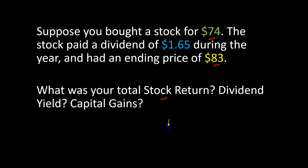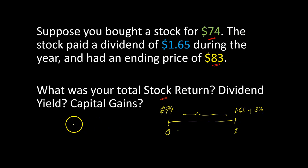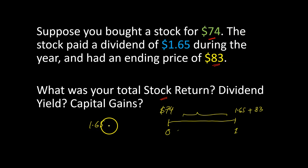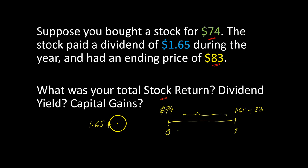Conceptually this is a rather simple exercise. All you have to do is say: here I am at time period zero where I'm buying the stock for $74 per share. During the entire year the stock pays $1.65, so you get $1.65 right here, and at the end of the year you are also able to sell the stock for $83. So by the end of the year I made $1.65 in dividends.